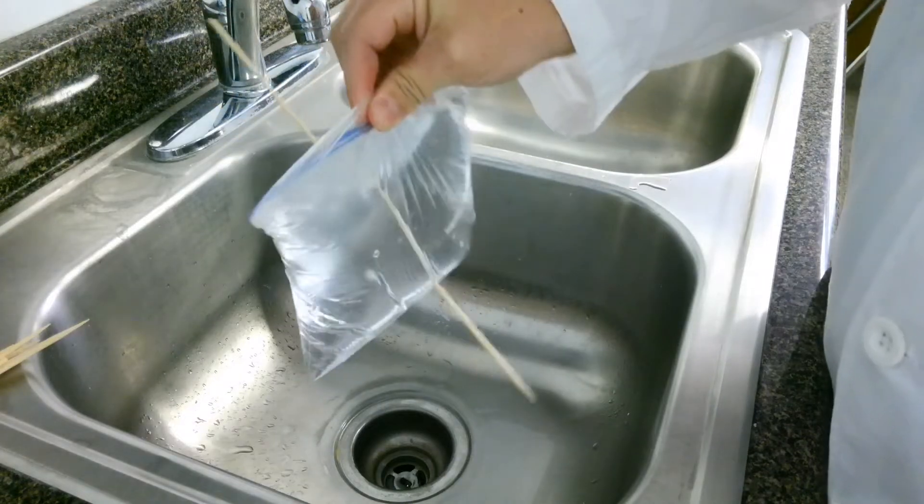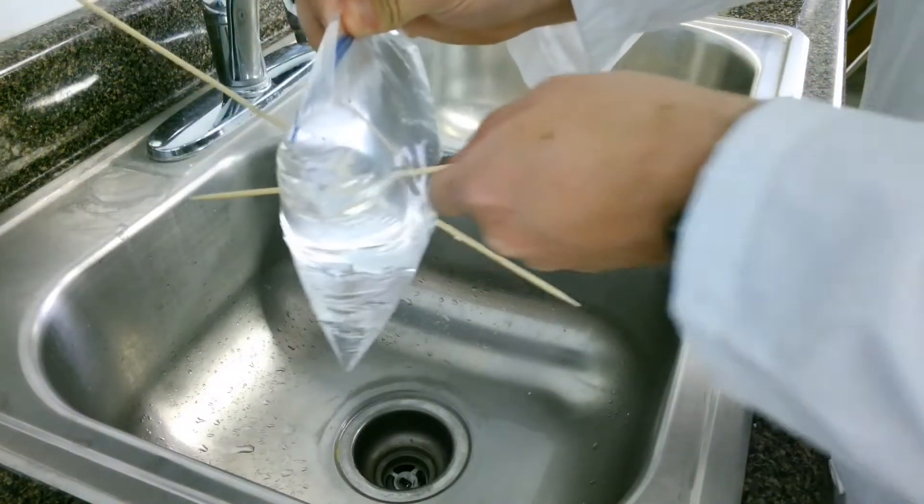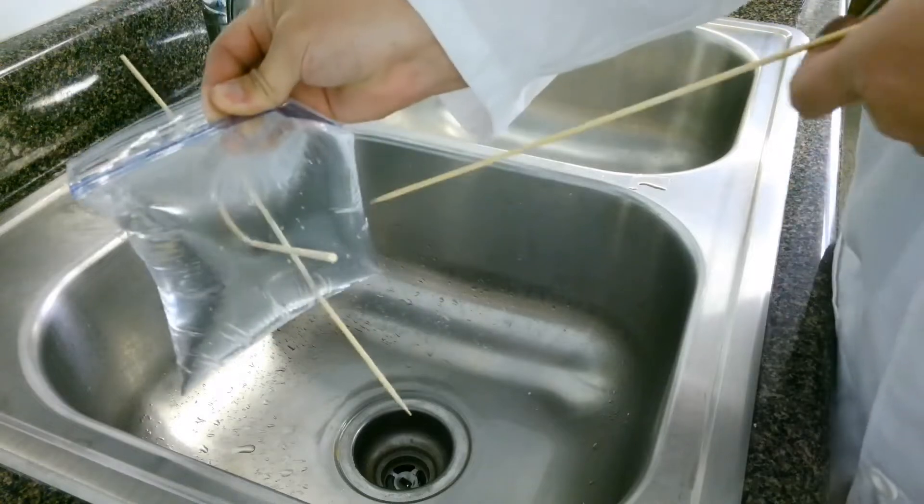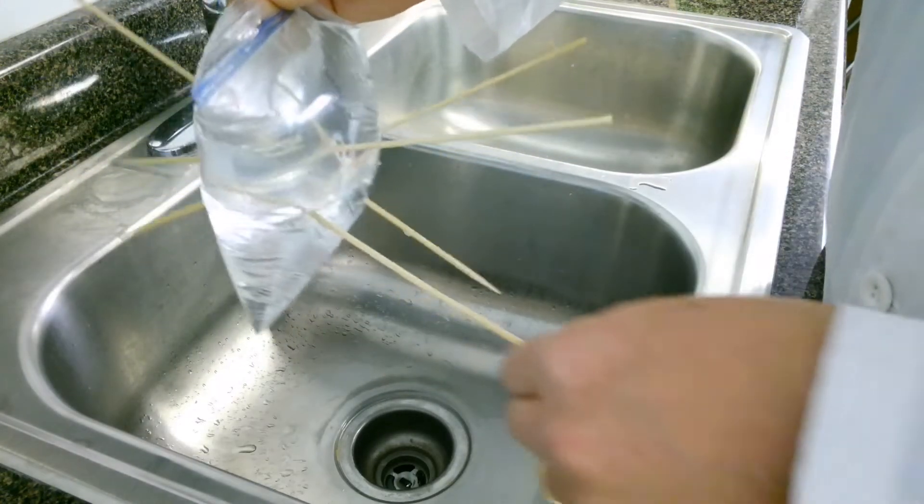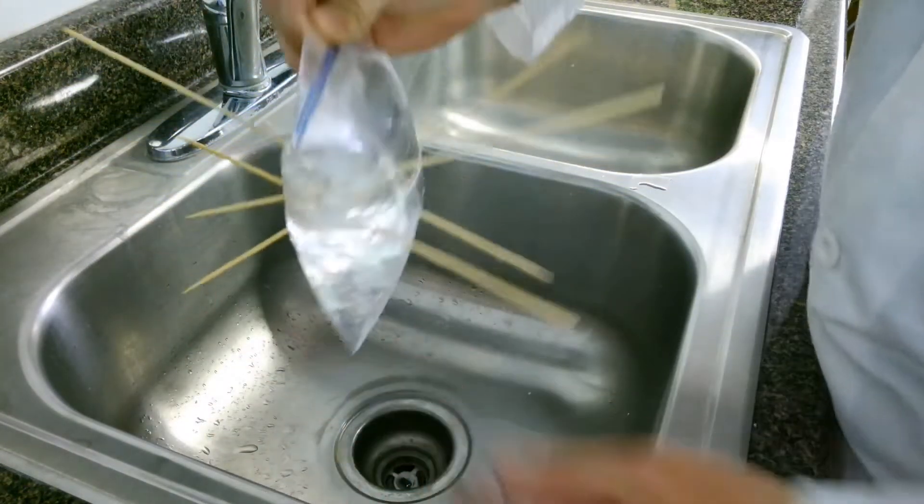Can you see that? Why does that happen? Why am I able to take these skewers and stab them right through the plastic? You can see it come out the other side. Why am I able to do this without any water dripping out? There's no water dripping out.